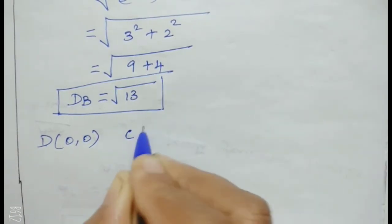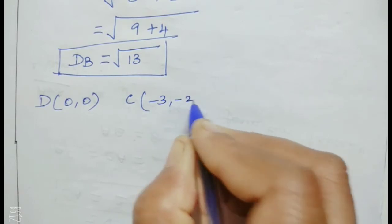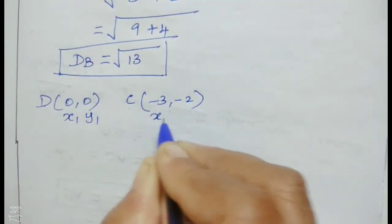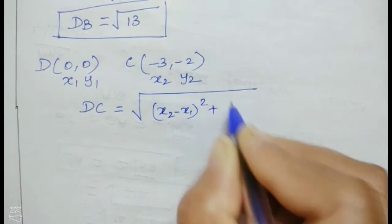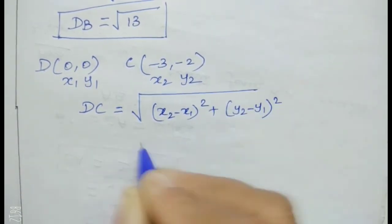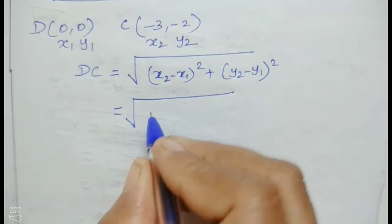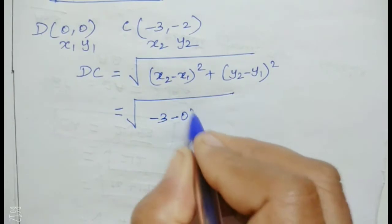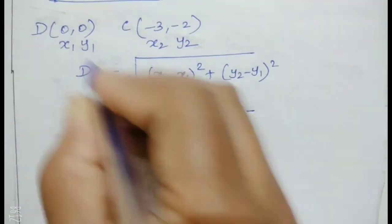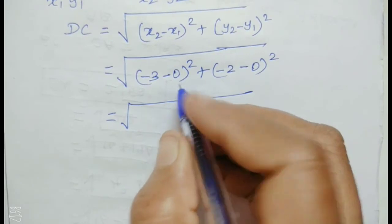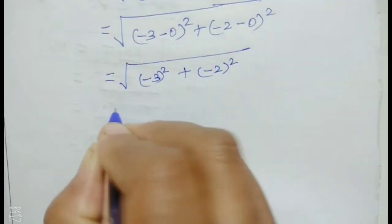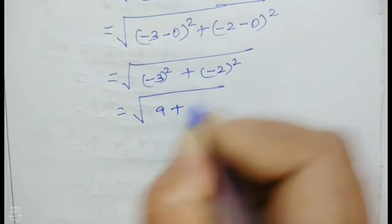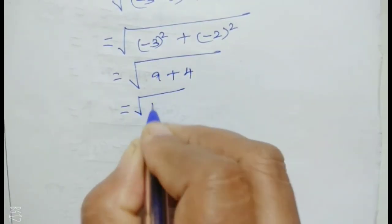For DC: root of (x2 minus x1) squared plus (y2 minus y1) squared, equal to root of (-3 minus 0) squared plus (-2 minus 0) squared, equal to root of 9 plus 4, equal to root of 13.